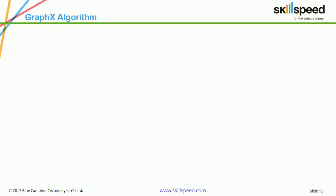As discussed in previous lessons, GraphX supports a lot of built-in algorithms such as shortest path and page rank. Page rank is one of the most commonly used algorithms — it measures the importance of each vertex in a graph.